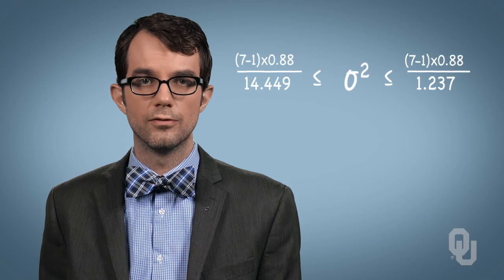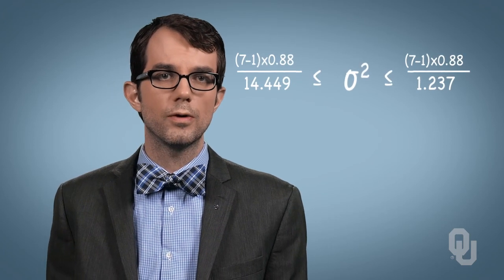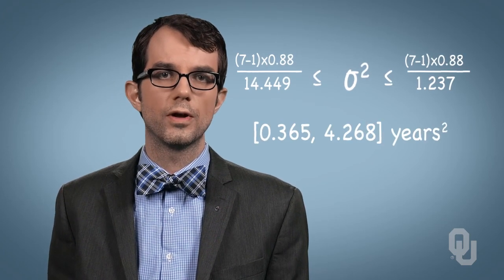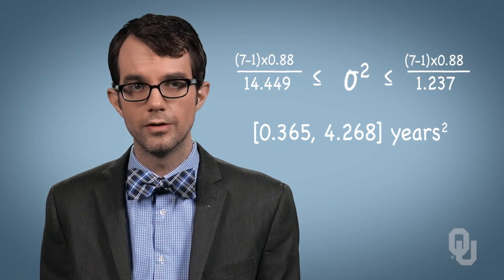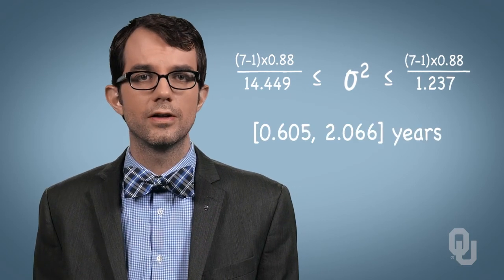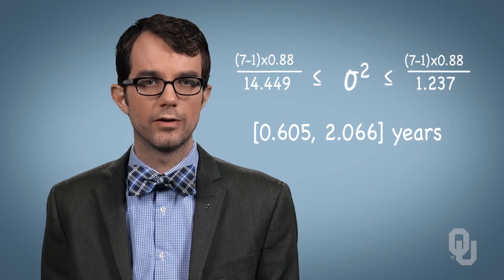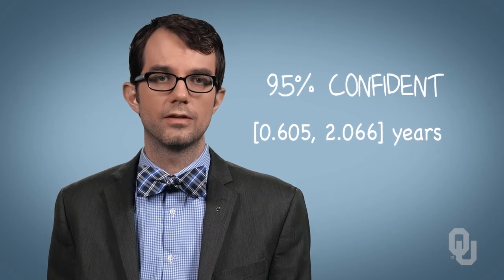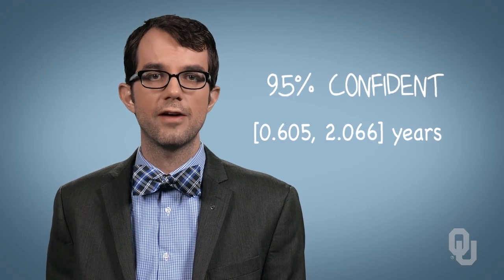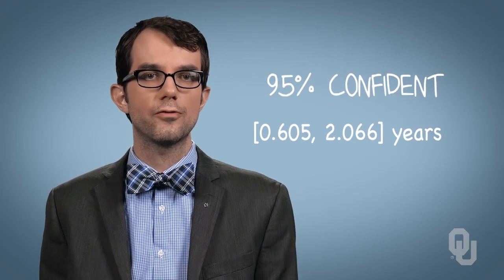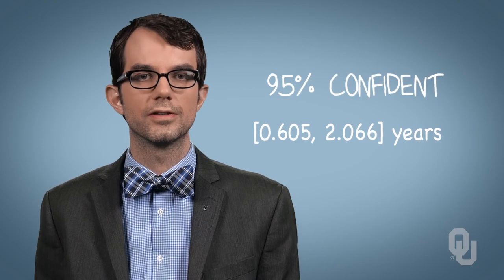The 95% confidence interval, as you see on the screen, is 0.365 to 4.268 years-squared, or 0.605 to 2.066 years. That is, based on our sample of seven batteries, we're 95% confident that the standard deviation of battery lifetime lies between 0.605 and 2.066 years.